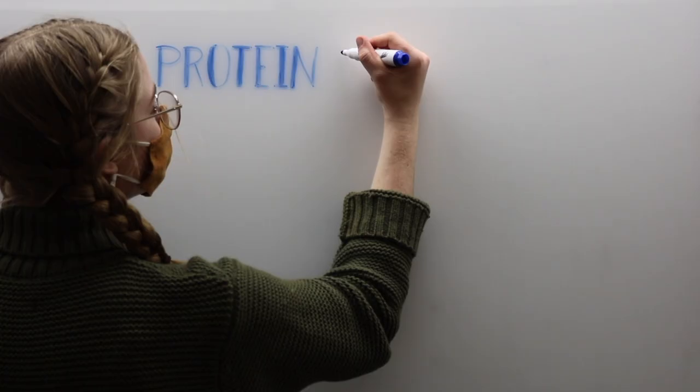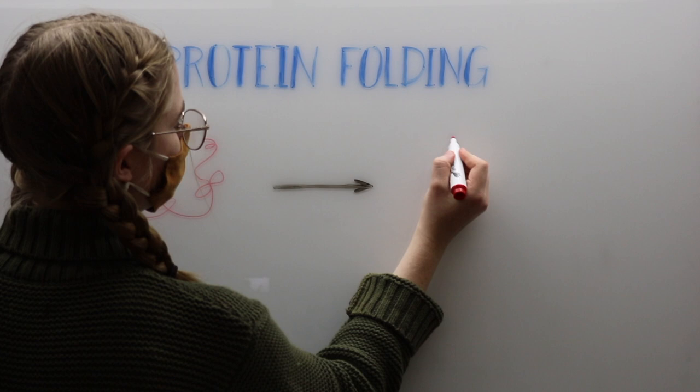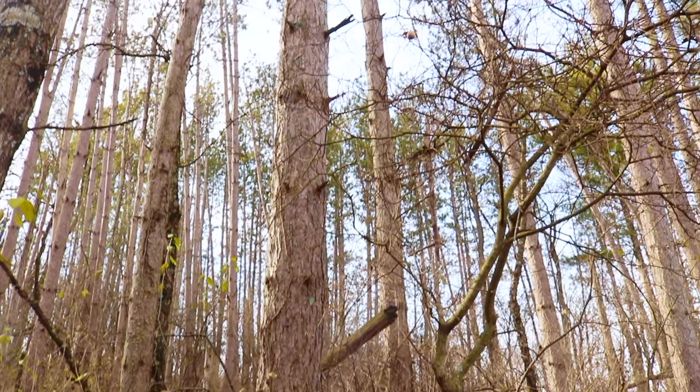Overall, this process is known as protein folding, and it is absolutely crucial to determining the protein's functionality within an organism. This is an example of structure influencing function on a massive scale, and it is the central focus of the Cavaniero group.